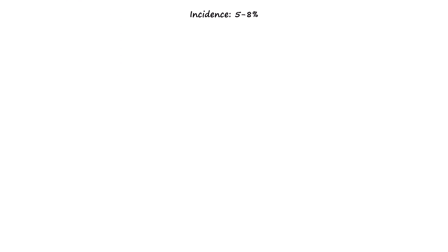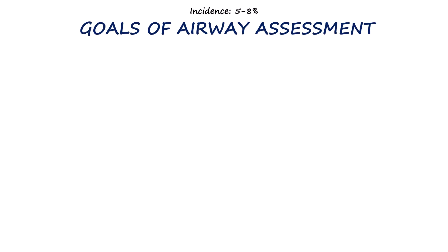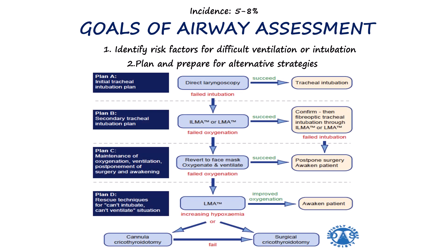So what exactly are we aiming to achieve with airway assessment? The main goal is to help us spot any risk factors that could make ventilation or intubation difficult. If we think the airway could be tricky, we can get backup ready — like a video laryngoscope, a fiberoptic scope, an LMA, or even surgical airway tools — before things get out of hand.